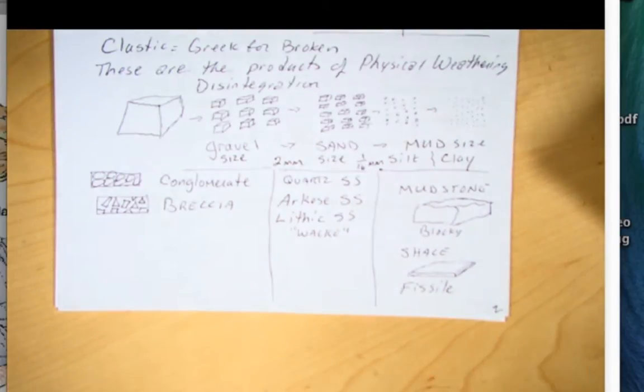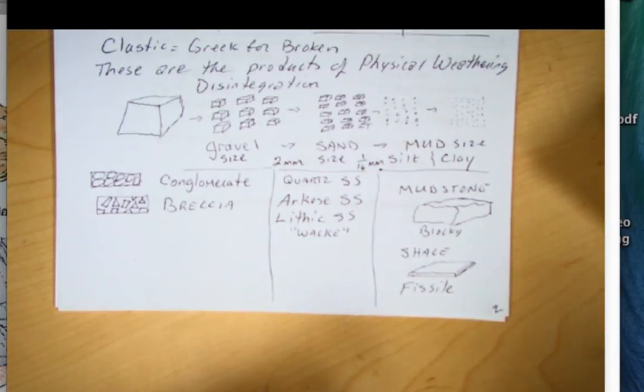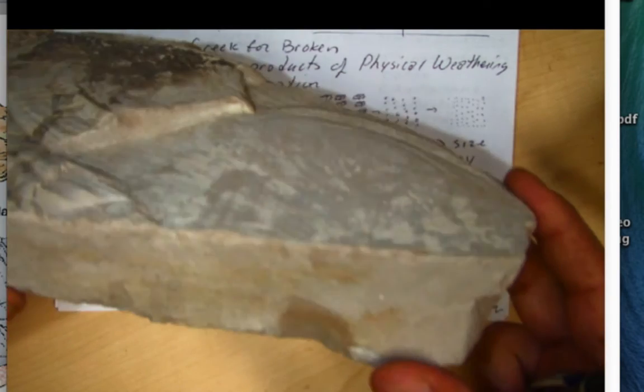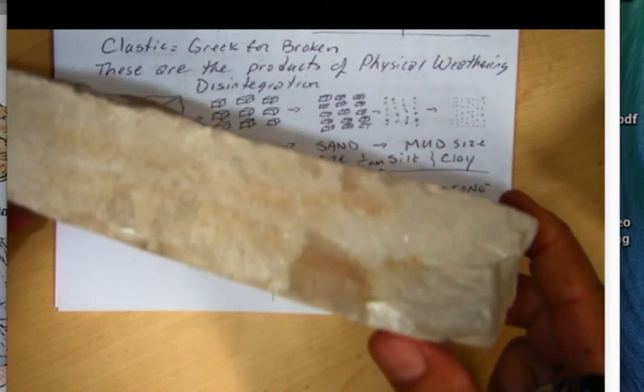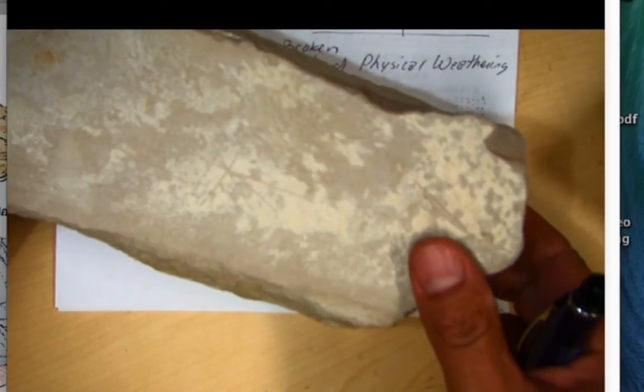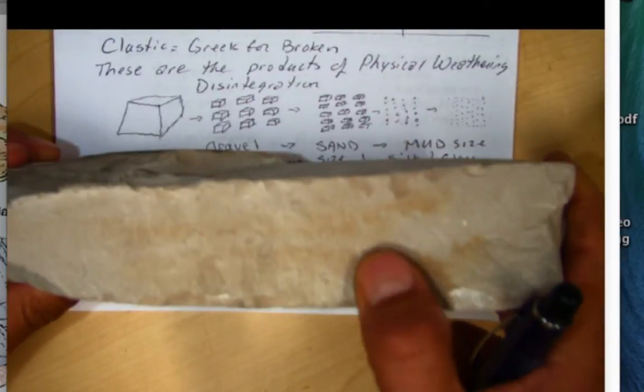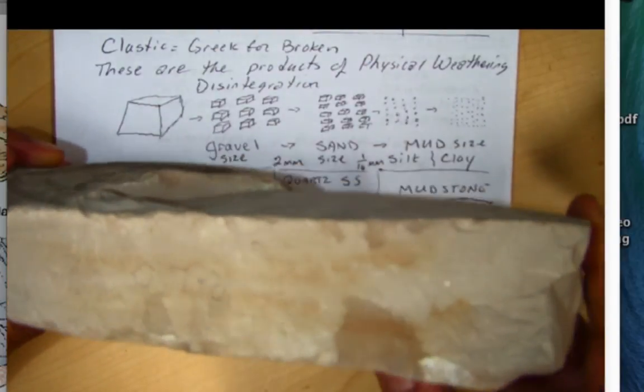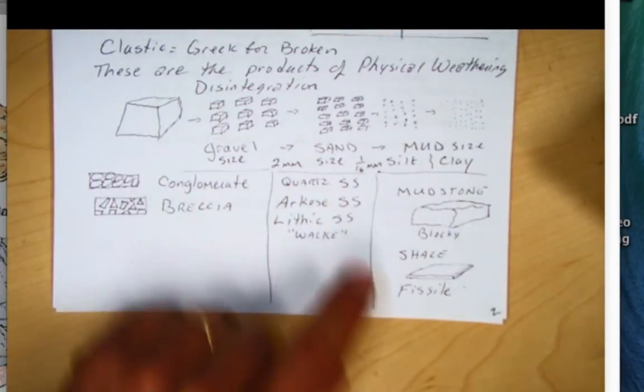And I want you to contrast that with a blocky, here's a block of mudstone. So we got some mudstone. Again, very fine grain. You really can't see any particles in here. Something less than one sixteenth of a millimeter.